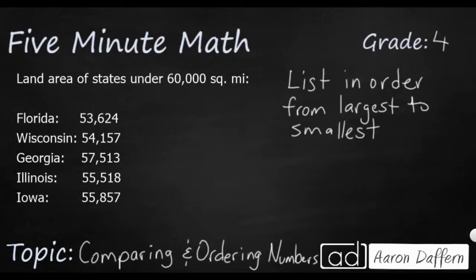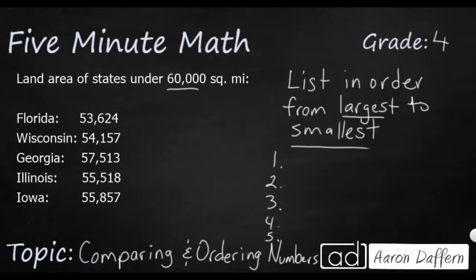Over on the left we have the land area of five different states — states that are under 6,000 square miles. Our task is to list them in order from largest to smallest. Sometimes when you are asked to compare and order real quantities like this, they might not say 'greatest to least' — and your job is to figure out which way it's going. Largest to smallest means greatest to least.